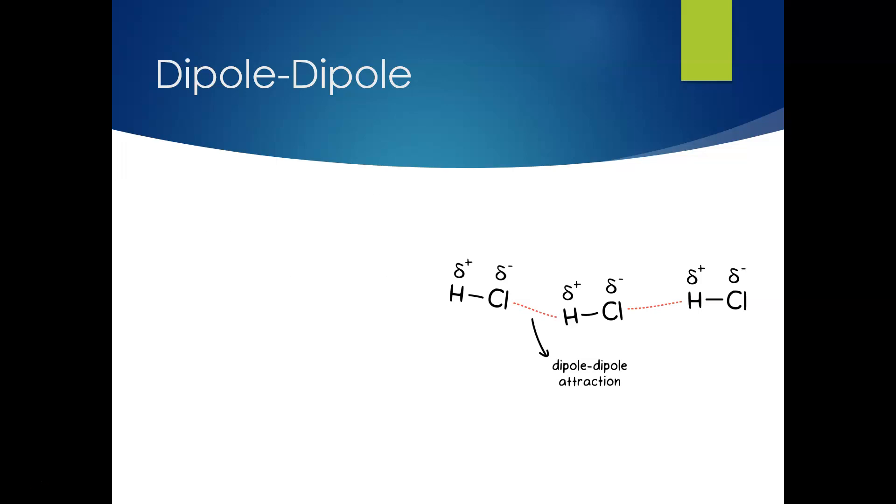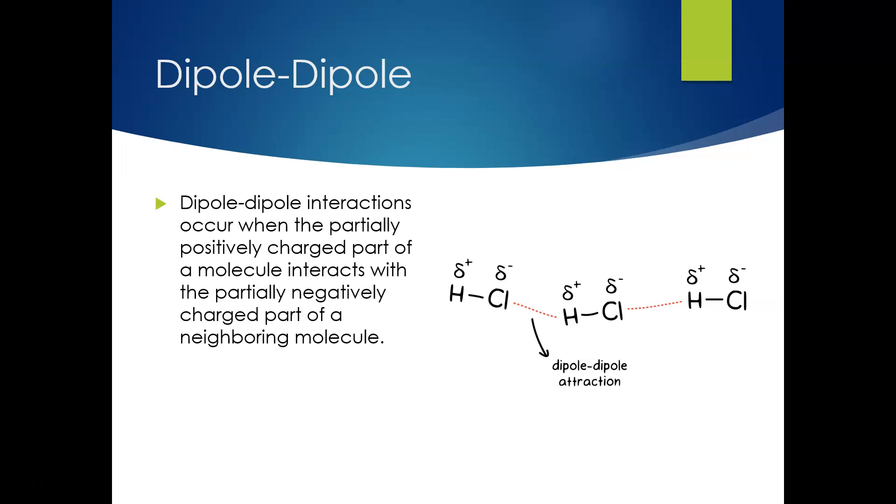So as far as dipole-dipole, dipole-dipole interactions occur when the positively charged part of a molecule, because we have a polar bond happening, interacts with the partially negatively charged neighboring molecule. So like we showed before, where we have hydrogen and chlorine, where they don't share equally because chlorine is more electronegative, so that hydrogen has a partial positive and the chlorine has a partial negative. That positive and negative from one molecule to another, intermolecule, is attracted to each other. We often see this happening between polar covalently bonded molecules. So if something is polar covalent, chances are you have a dipole-dipole attraction happening. It's just the positive of one end being attracted to the negative of another end, creating a weak intermolecular force.